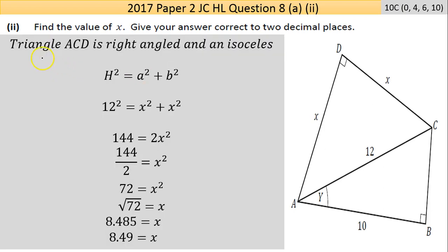So triangle ACD is right-angled and isosceles. So that angle there and that angle there are equal. Now we know that this is 90, so these are going to be 45 and 45. We're asked to find the length of the sides, so we can use Pythagoras.